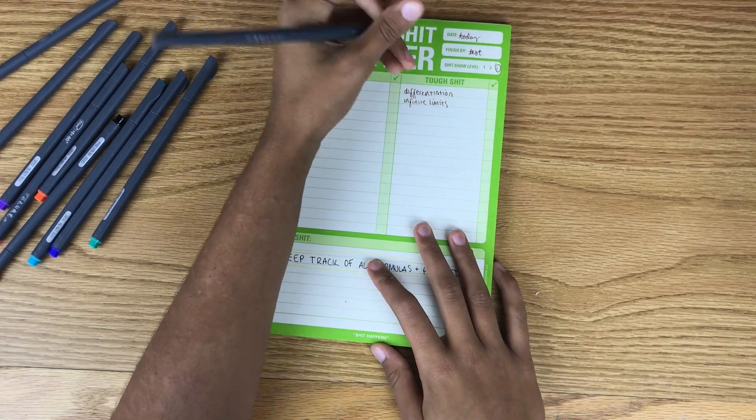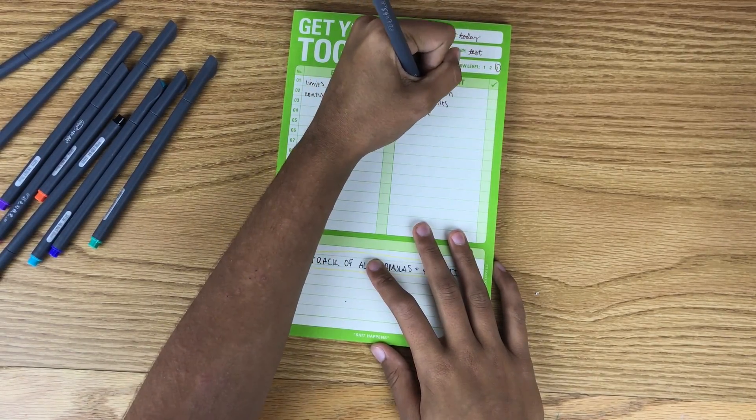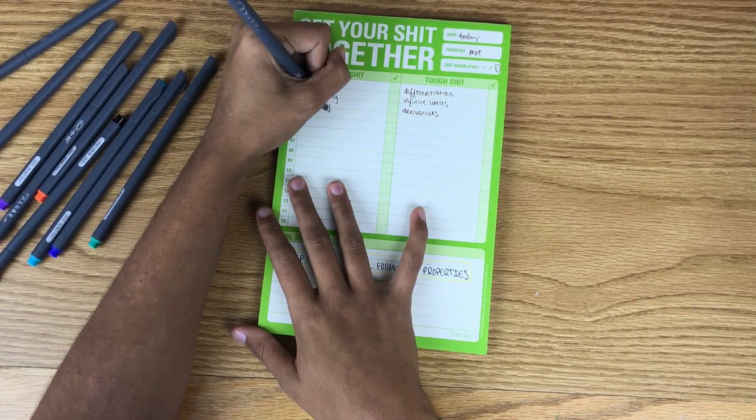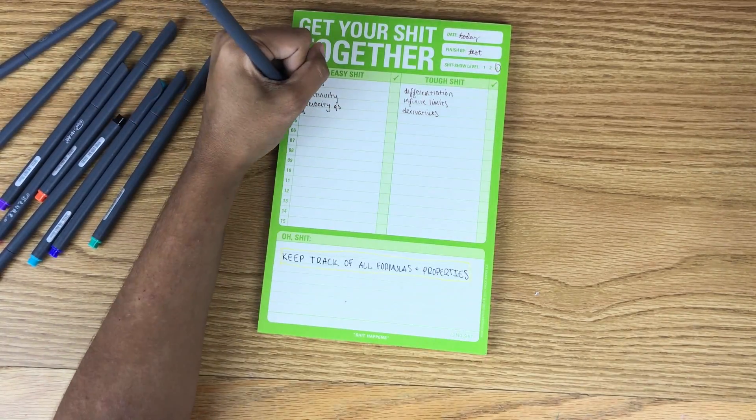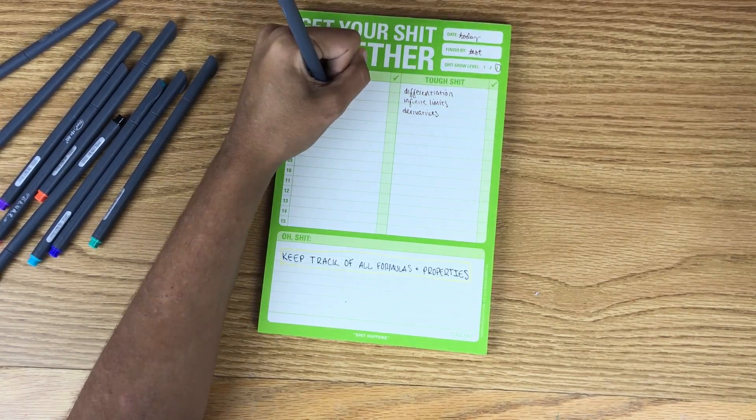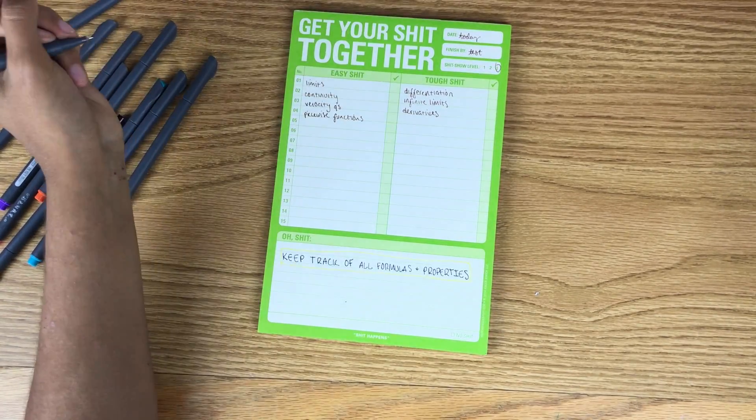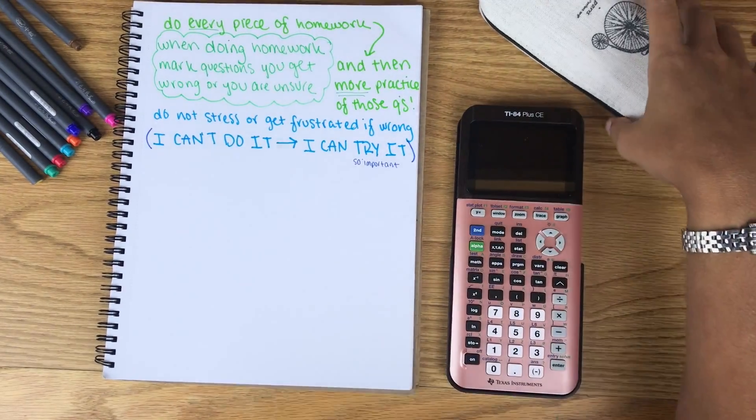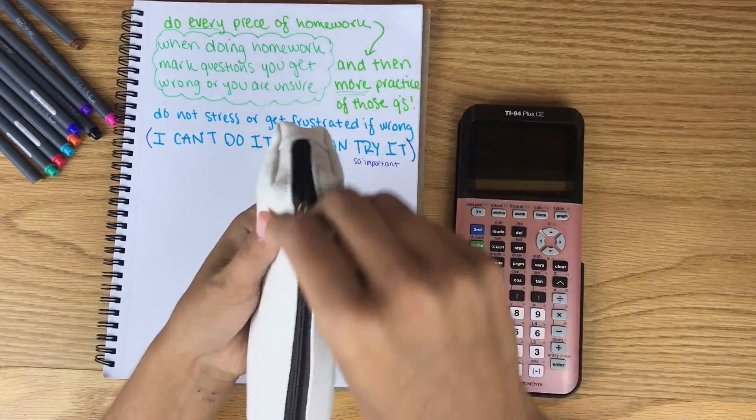Because one time I forgot to study one particular type of limit or something like that and it ended up being on the test and I got that question wrong just because I forgot that that's something that we covered. The seventh thing that I would say is essential to doing well in a math class is to make sure that you are using all of the resources that are available to you.